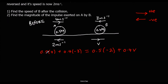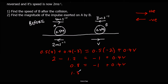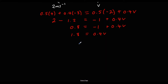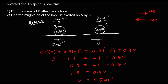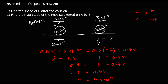Simplifying: 2 minus 1.2 equals negative 1 plus 0.4V, so 0.8 equals negative 1 plus 0.4V. Adding 1 to both sides gives 1.8 equals 0.4V, and dividing both sides by 0.4 gives V equals 4.5 m/s. Since the answer is positive, B is moving to the right with a speed of 4.5 m/s.